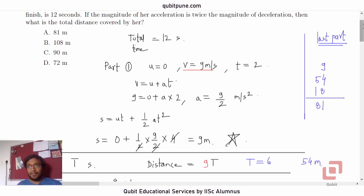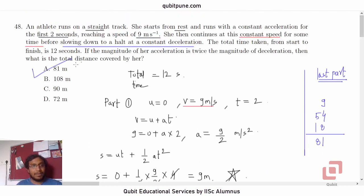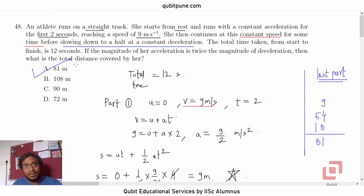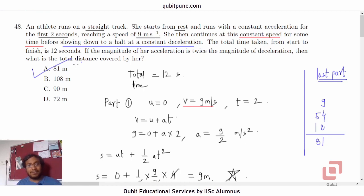So the answer is option A, 81 meters. It is a fairly simple problem, but you have to split it into 3 parts according to the acceleration: positive in the first case, zero in the second, and negative in the third. The answer is question 48, option A.